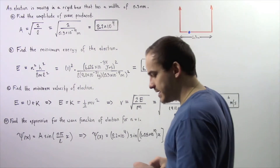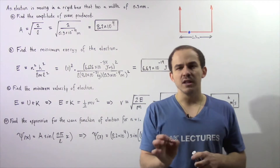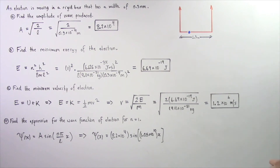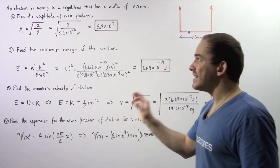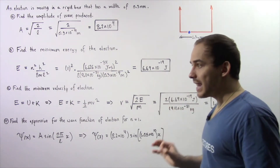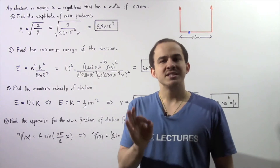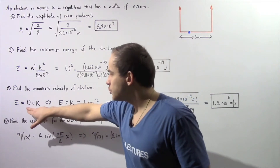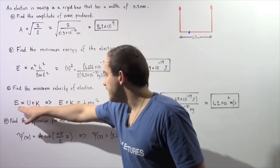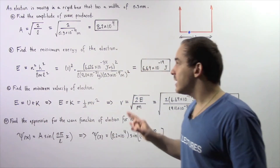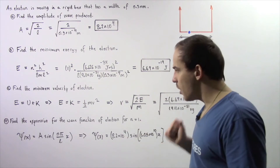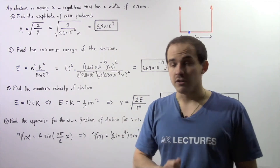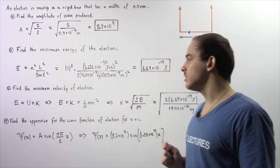Now let's move on to part C. In part C we want to find the minimum velocity of our electron as it moves between the two corners of our rigid box. Recall that for an electron moving inside a rigid box, inside an infinite potential well, the potential energy is zero. So the total energy E equals U plus K, and because U is zero, E equals K. For non-relativistic motion, K equals one half m times V squared, where m is the mass of the electron and V is the velocity we are looking for.